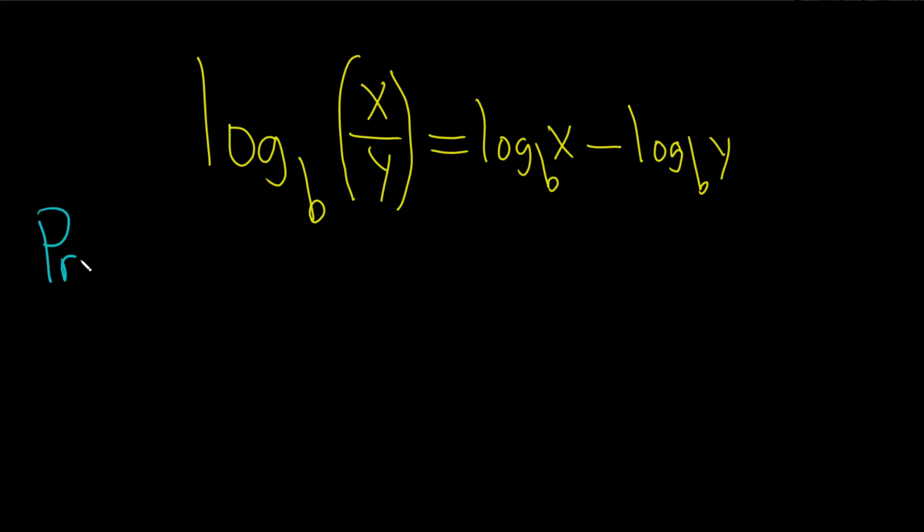Let's go ahead and go through the proof. We'll start by giving these names. I'm going to call this one here m, so we'll let m equal log base b of x. And we'll let n be the other one, so n equals log base b of y.